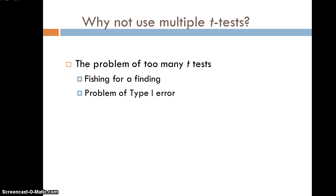So why not use multiple t-tests? If you had three groups, you'd only need three t-tests. The problem is that if you have too many t-tests, you end up increasing your type 1 error rate. For each test that you run, the probability of a type 1 error is 5%, but when you add more tests, you end up increasing that type 1 error rate because they're somehow related.